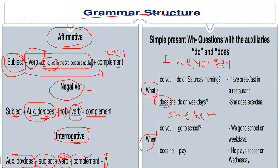Here are some examples: 'What do you do on Saturday morning?' 'What does she do on weekdays?' 'When do you go to school?' 'When does he play?' Here are a few examples of interrogative sentences that we can make through the simple grammar structure of simple present tense.